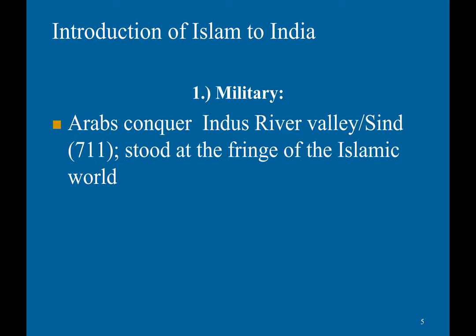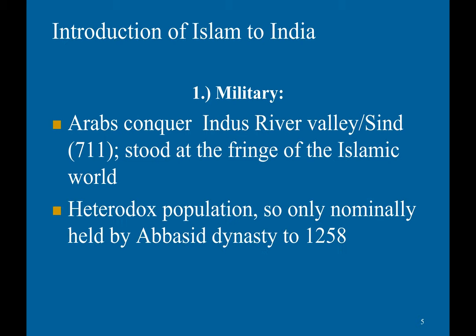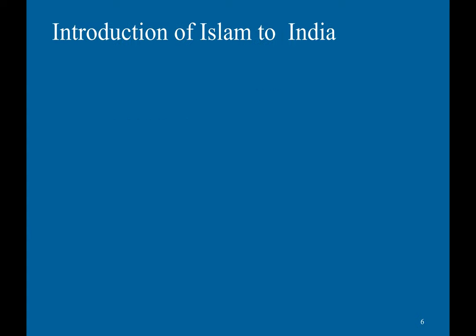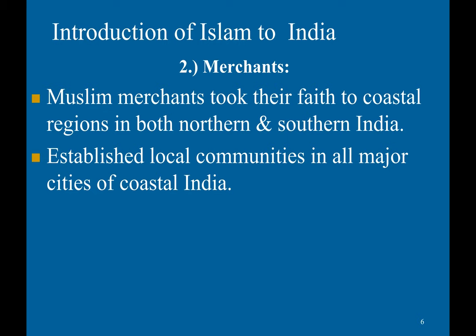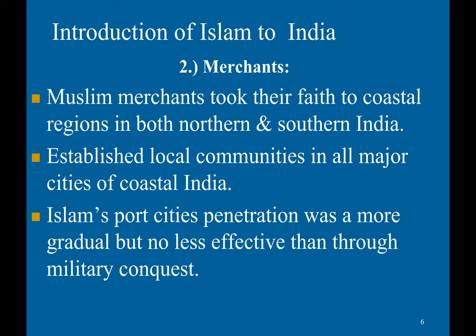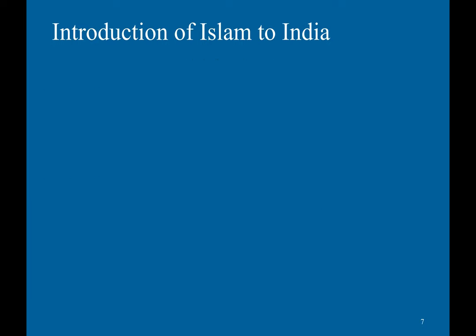While this was going on, Islam was introduced to India. First, through the military: the Arabs conquered the Indus River Valley around 711 CE. However, this area stood at the fringe of the Islamic world, resulting in a very mixed, religiously mixed population. This territory was only nominally held by the Abbasid dynasty until 1258, when their capital Baghdad was sacked by the Mongols. Islam also spread through Muslim merchants, who brought their faith to coastal regions of both northern and southern India, establishing local communities in all major coastal cities. This port city penetration was a more gradual but no less effective method of spreading Islam than military conquest.